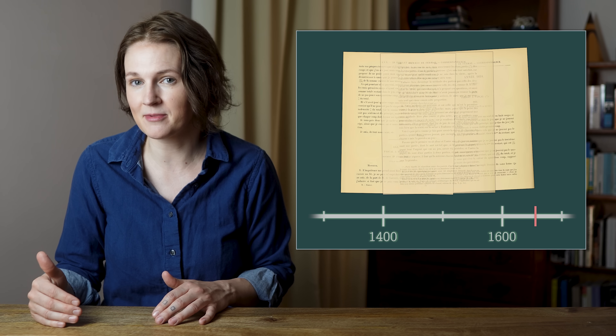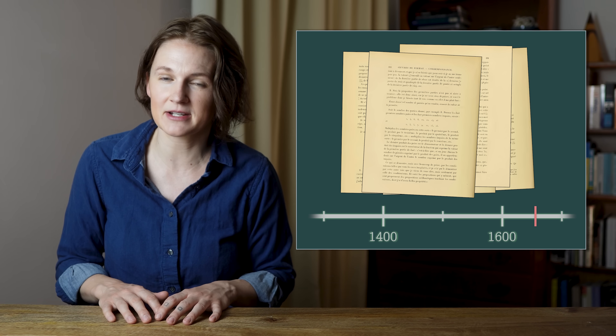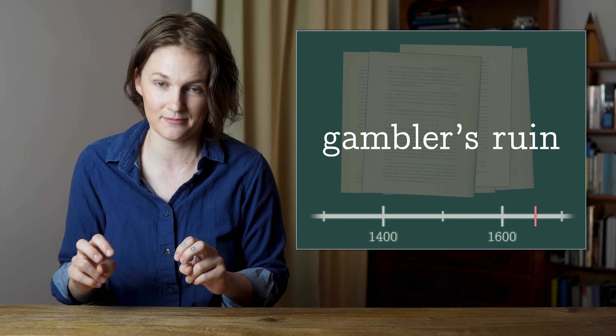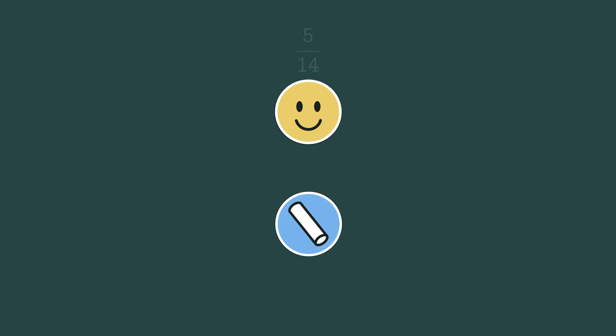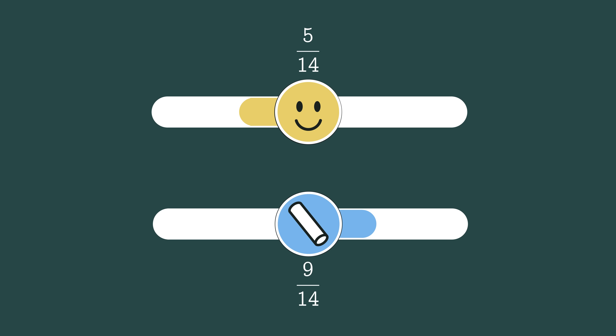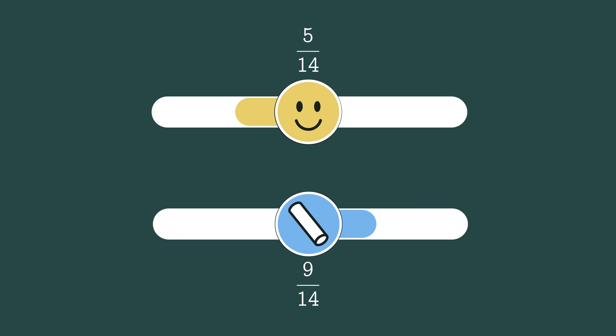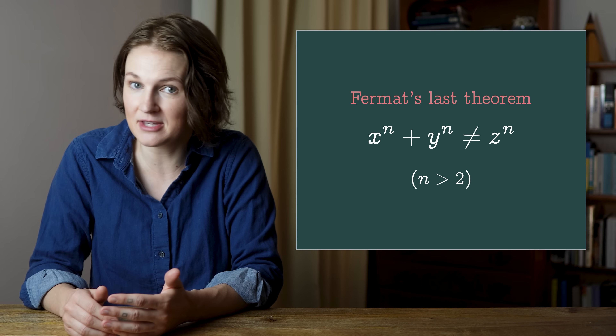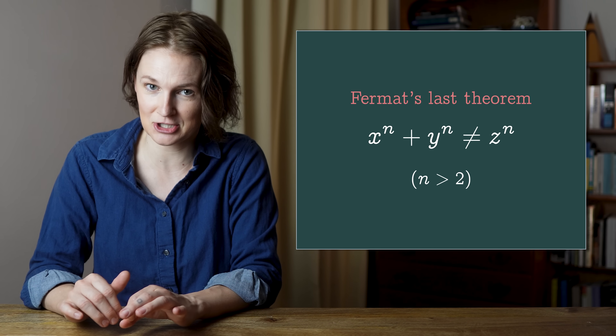Two years after their exchange about the problem of points, Pascal and Fermat briefly corresponded again about a problem now known as gambler's ruin. Again, you and I are playing a game in rounds, but now we have unequal odds of winning, which really changes the problem — it's like a weighted coin. You have a 5/14 chance of winning and I have a 9/14 chance. Each round, the winner gains one point and the loser loses one point. The game ends when one person has 12 more points than the other. What is the probability that you win? Fermat replied with the correct numerical answer, but didn't show his work — which seems to be a theme with Fermat: correct answers without explanation. You can think about how to solve this gambler's ruin problem yourself, and if you want, leave your answer in the comments — but please show your work.